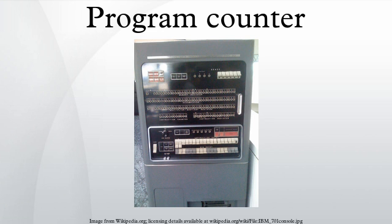These include branches, subroutine calls, and returns. A transfer that is conditional on the truth of some assertion lets the computer follow a different sequence under different conditions. A branch provides that the next instruction is fetched from somewhere else in memory. A subroutine call not only branches but saves the preceding contents of the PC somewhere. A return retrieves the saved contents of the PC and places it back in the PC, resuming sequential execution with the instruction following the subroutine call.